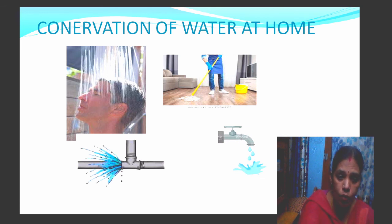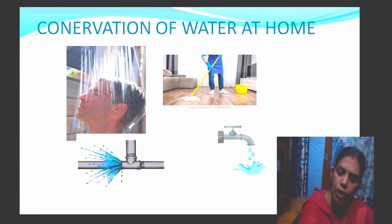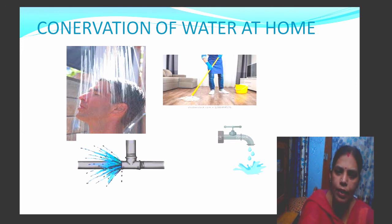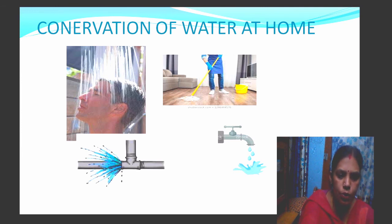For washing vegetables, the water used should not simply be thrown down the sink. Instead, wash them in a vessel and use that water for watering plants. In toilets, we can also use small pressure cistern tanks to prevent the wastage of water.